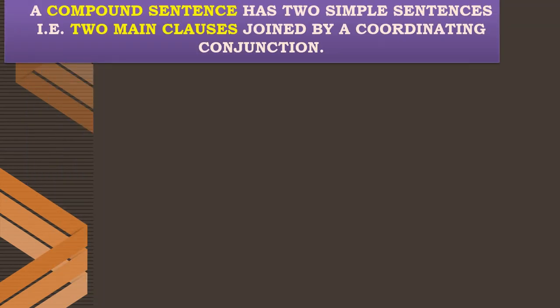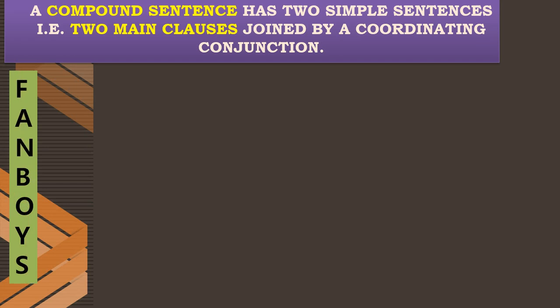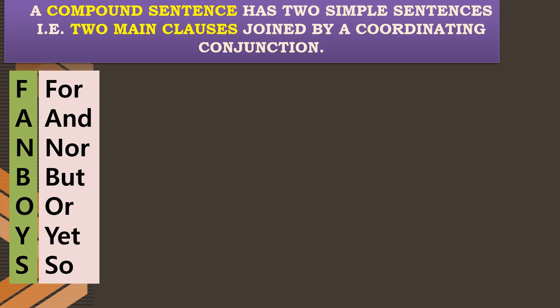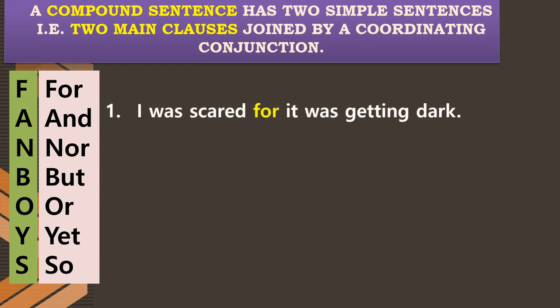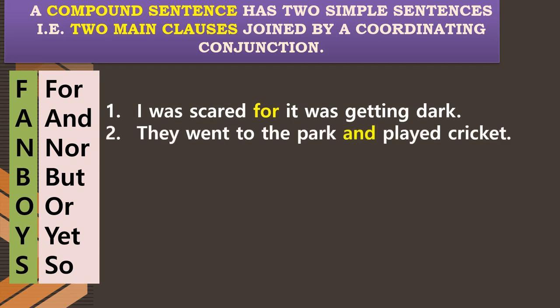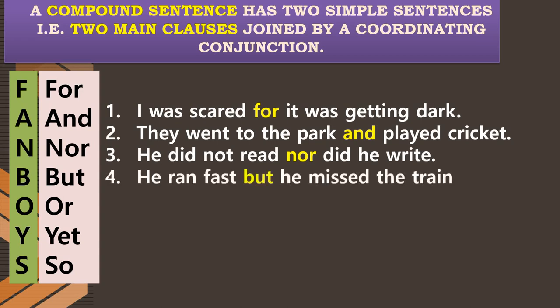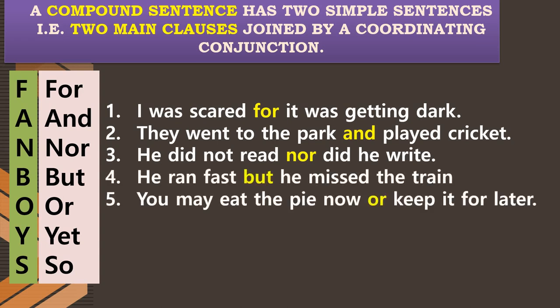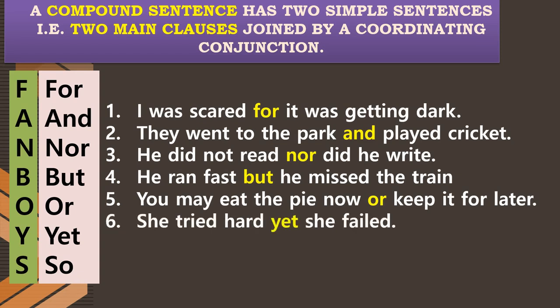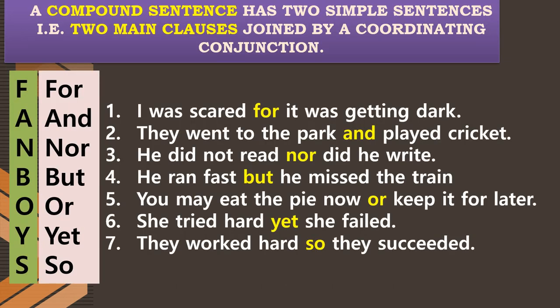A compound sentence has two simple sentences — two main clauses — joined by a coordinating conjunction. Here is a trick to remember the coordinating conjunctions: FANBOYS — F for 'for,' A for 'and,' N for 'nor,' B for 'but,' O for 'or,' Y for 'yet,' and S for 'so.' Examples: 'I was scared, for it was getting dark.' 'They went to the park and played cricket.' 'He did not read, nor did he write.' 'He ran fast but he missed the train.' 'You may eat the pie now or keep it for later.' 'She tried hard yet she failed.' 'They worked hard so they succeeded.' These are all compound sentences.